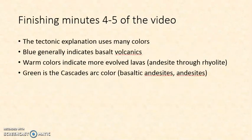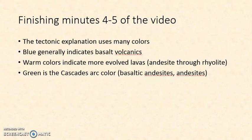When you get to finishing minutes four to five of the video, you'll find that the tectonic explanation uses a lot of colors that pop in and spread over the landscape with a little explanation. Just to keep it in perspective: blue is generally used in this video for basalt volcanics, and the warmer colors indicate more evolved lavas — the andesites through the rhyolites. They've chosen green for the Cascades arc, which is basaltic andesite to andesite in composition, which is a little bit of a change, but I hope you can keep track of it.